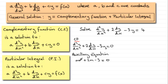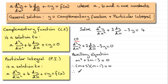We solve this quadratic equation. In this instance it factorizes to (m + 3)(m − 1) = 0, giving us two real and different roots: m = −3 and m = 1.